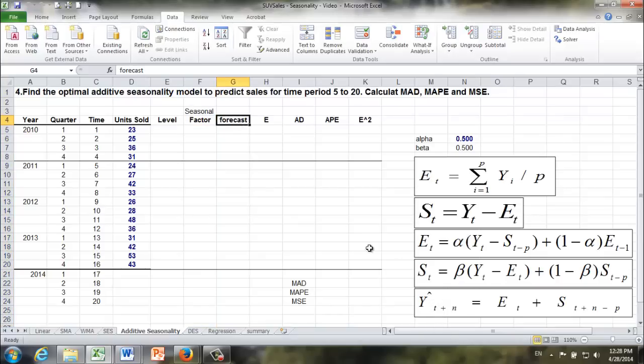And Y_T hat, as usual, is forecast, they are in column G. And then each column, we have forecast error and so on and so forth.